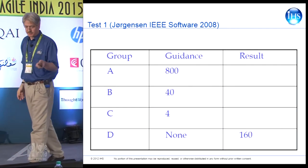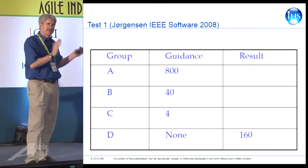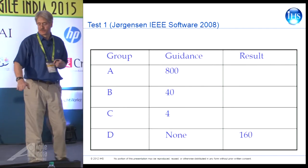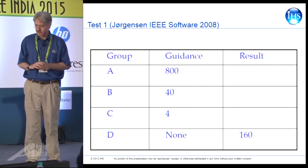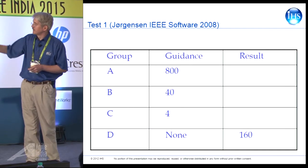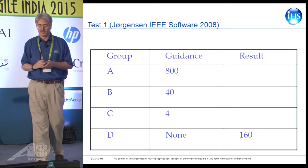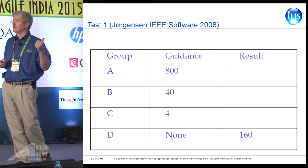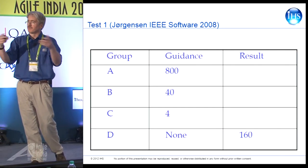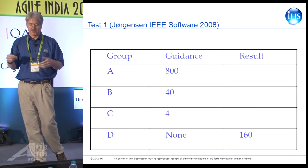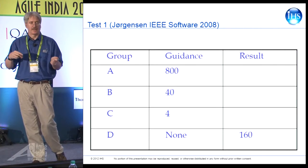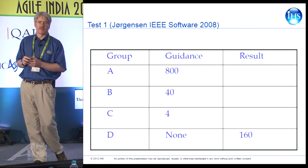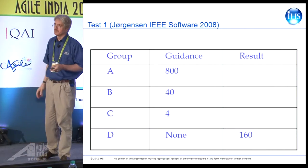Let's look at another bias — more work by Magne Jørgensen. He took the exact same specification to four different groups. Group D was the control with no guidance, and they came back saying it's 160 hours of work. Group A was told the guidance was 800 hours. Group B was told it would be about 40 hours. Group C was told it would be about 4 hours. So what sort of results do we get? Group A came back with 300 hours. The 40-hour group went up to 100. The group told 4 hours came back with 60.